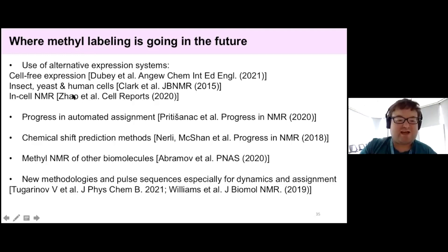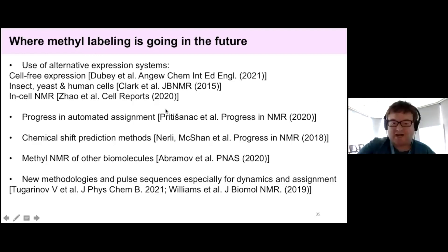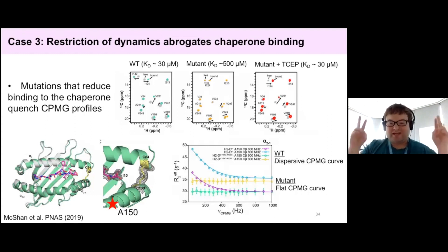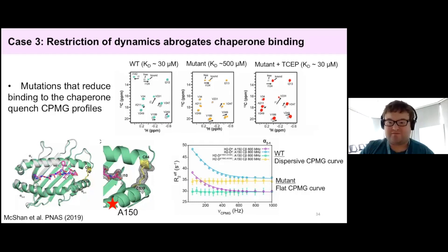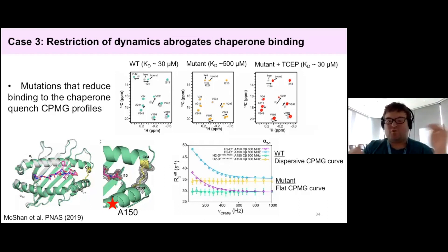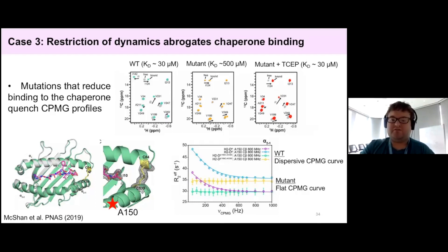Question: How do you decide if a CPMG curve is flat or not? The field's standard is that if your R2 effective change is greater than 1 between zero and the largest CPMG frequency used, it's considered a dispersed CPMG curve — though in reality that's a very low number. If your CPMG curves are very flat, either you don't have exchange on this timescale or you're outside the regime of the CPMG type you're using. If you switch from a single quantum to a triple quantum experiment, the difference in R2 effective will be larger and potentially more significant.